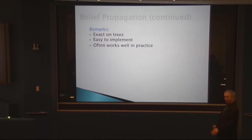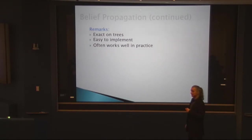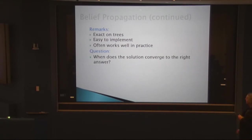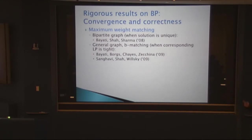On trees, belief propagation is exact and easy to program — essentially as short as written here — and it often works very well in practice. The key question is when the solution converges to the right answer. We know something rigorous about this in certain simple models. One of them is maximum weight matching. It was known relatively early that it works on bipartite graphs provided you have a unique maximum weight matching, and more generally for so-called B-matchings.